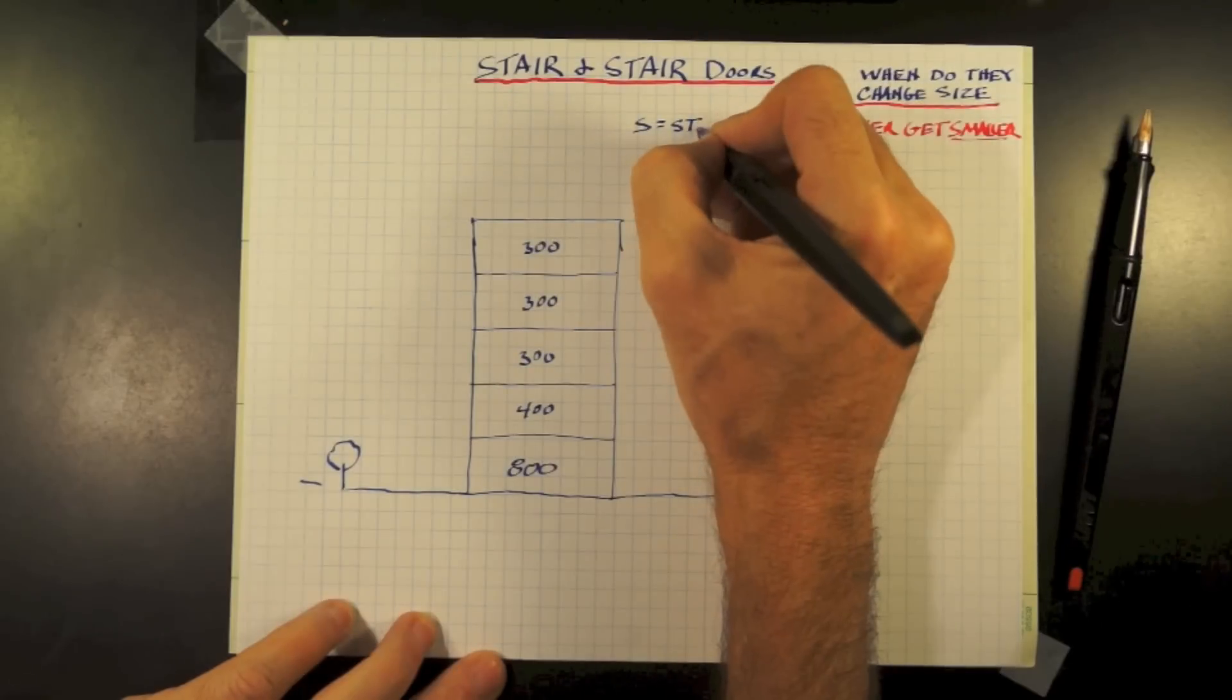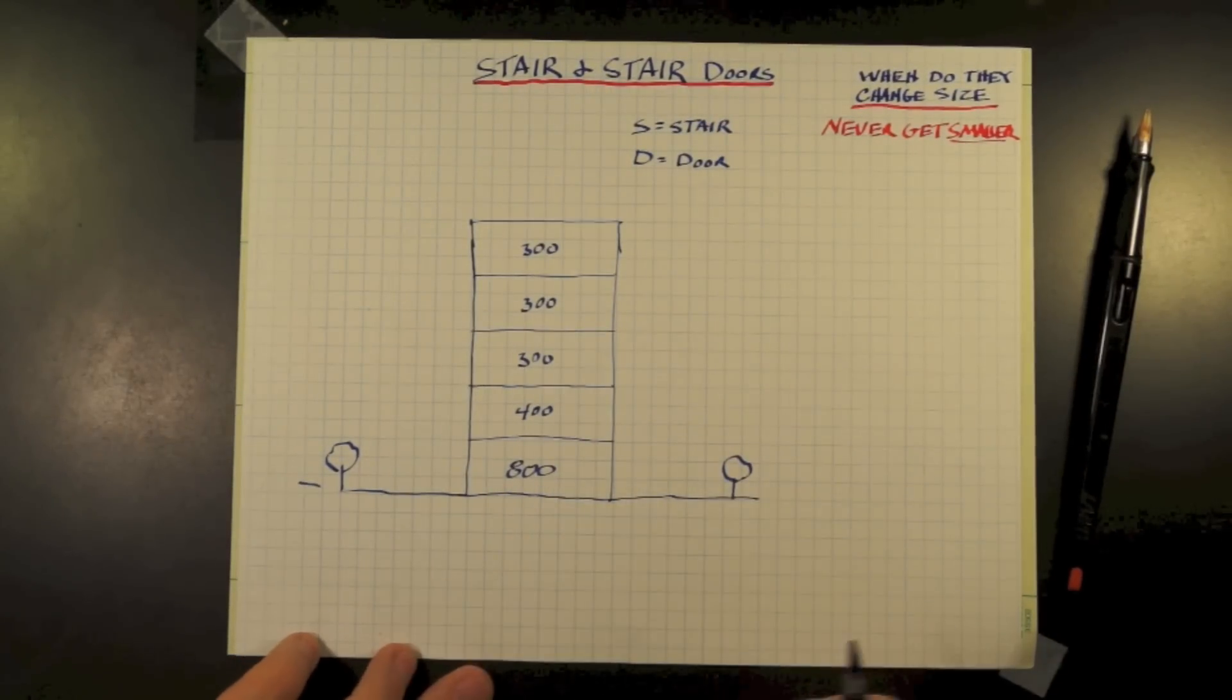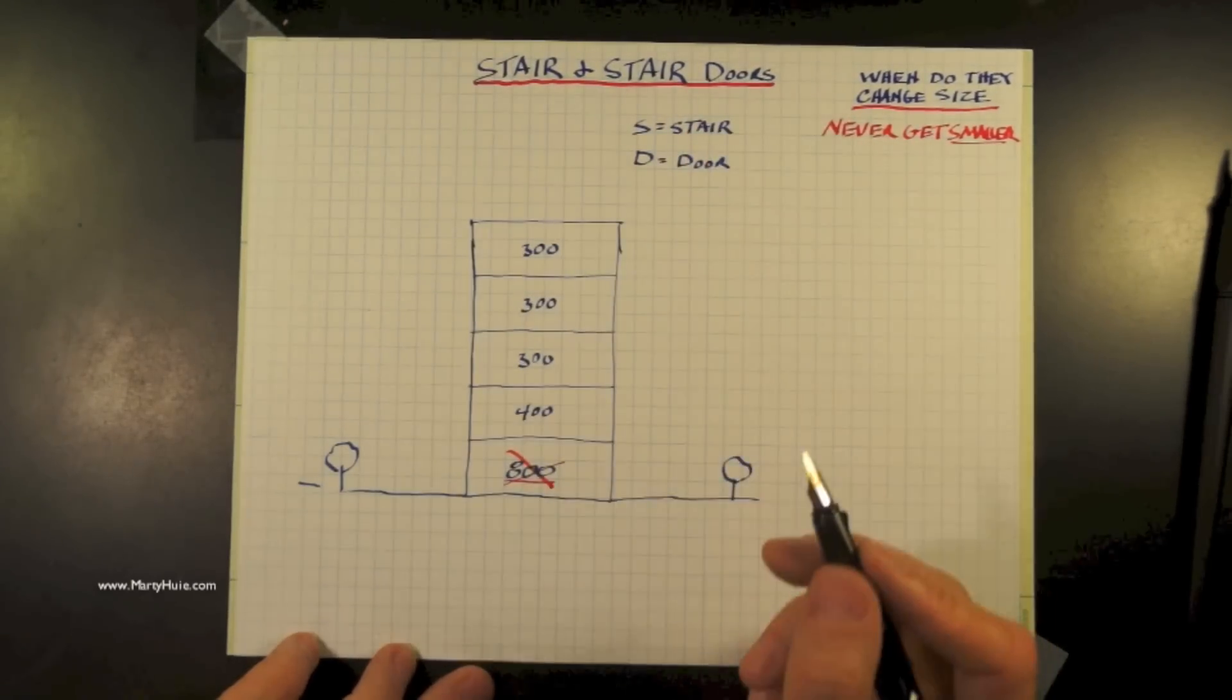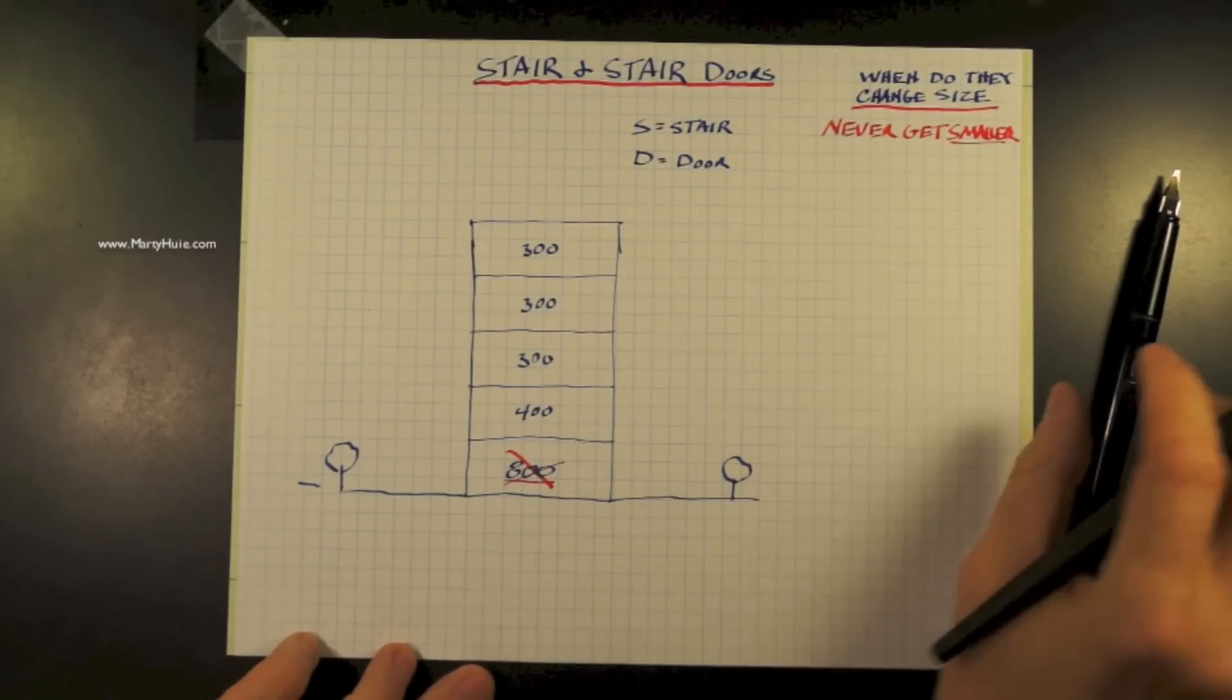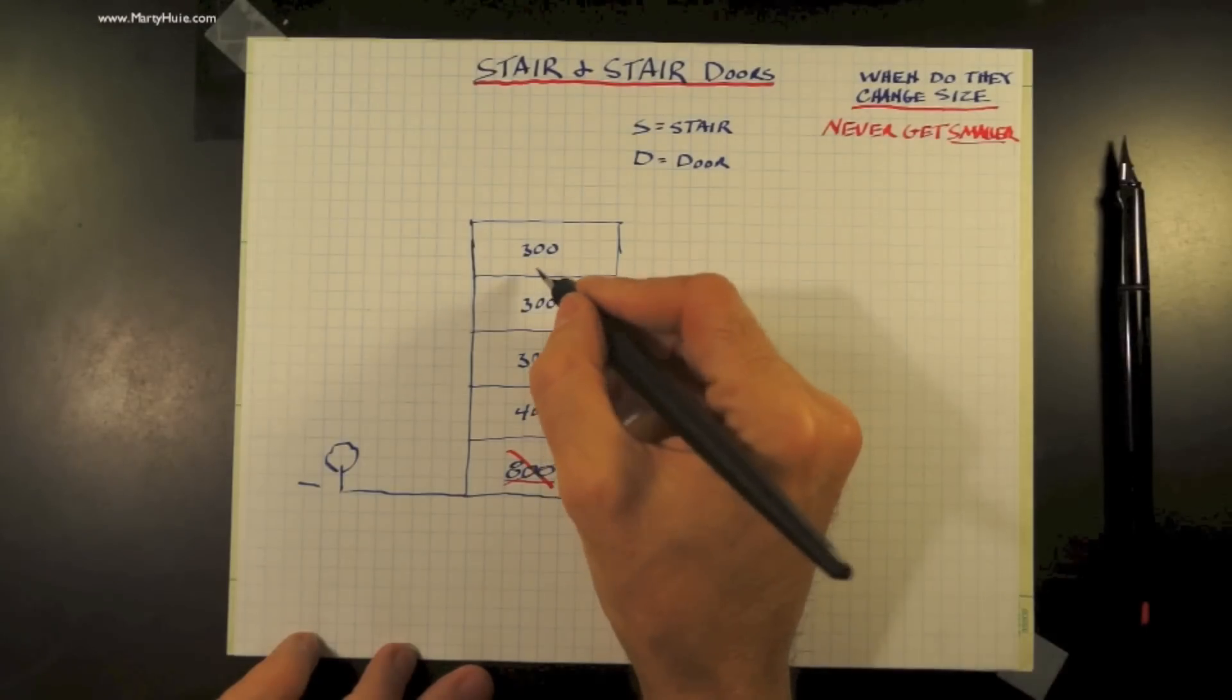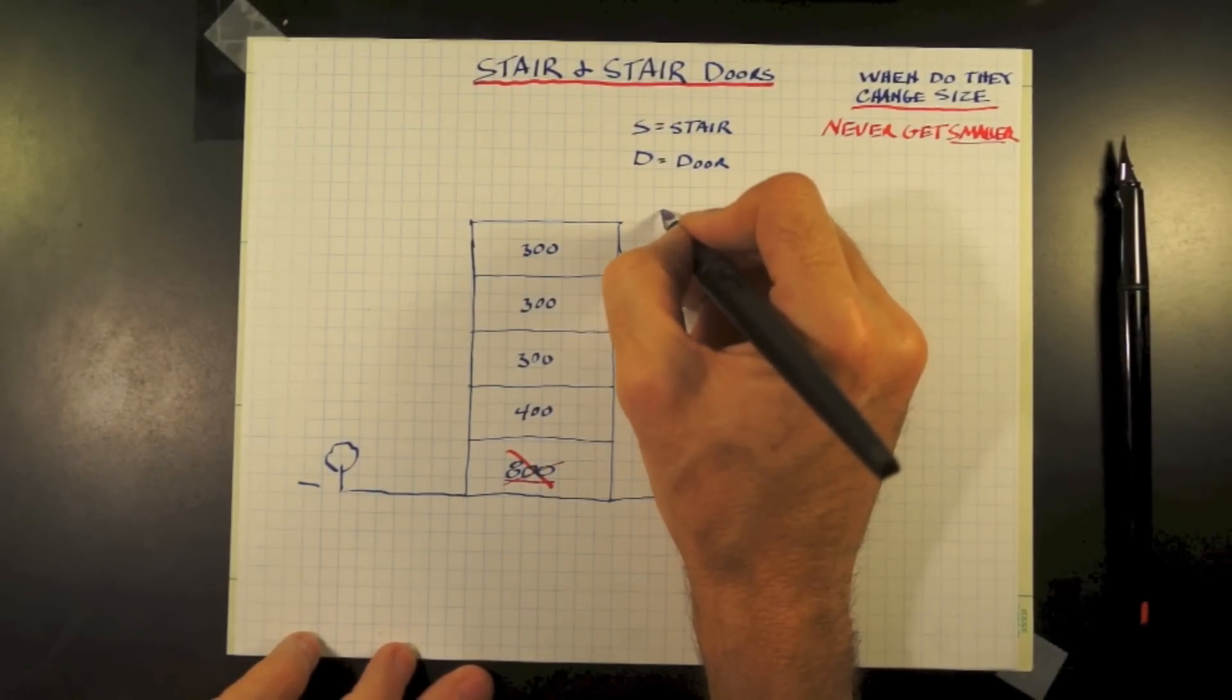Also, let's use S for stairs and D for doors. We typically do not need to concern ourselves with the occupant load on the first floor because there is direct access to the outside, not through the stairs or stair doors. If you are exiting the ground floor through your stairwell, you will need to pay attention to your stair door widths.